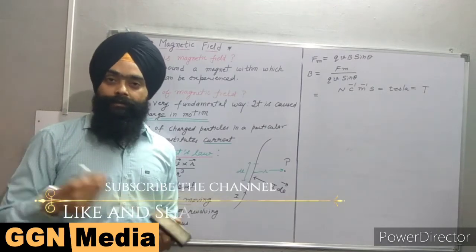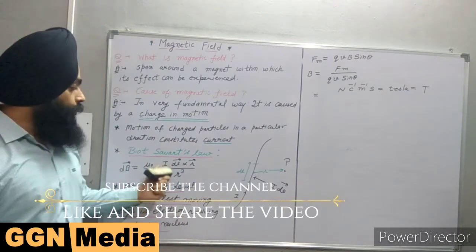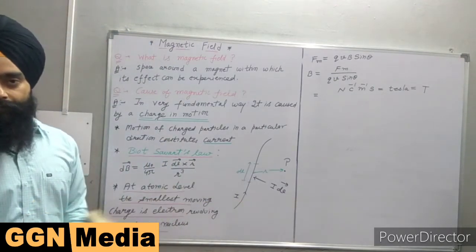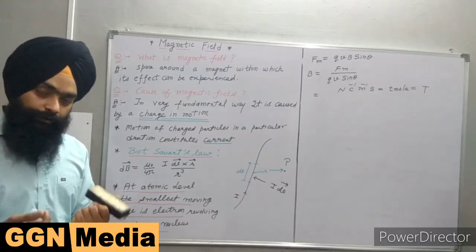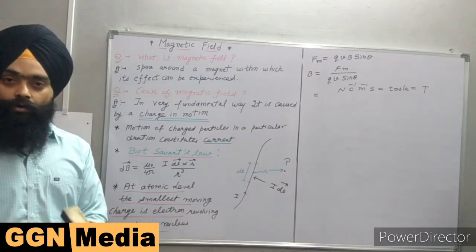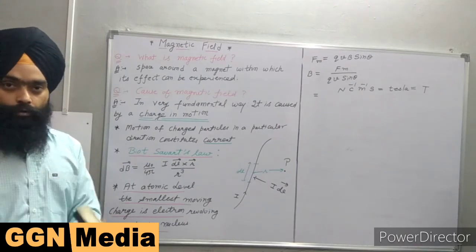If I talk at the atomic level, this is the microscopic form of the magnetic field. At the atomic level, the smallest current element is the electron revolving around the nucleus. We will discuss this portion later on.